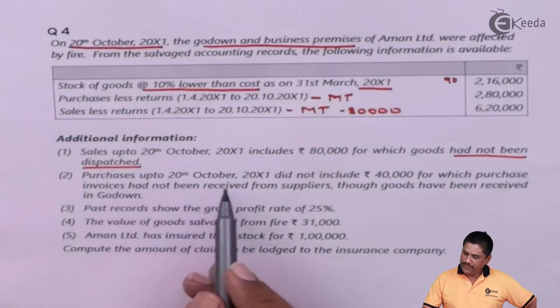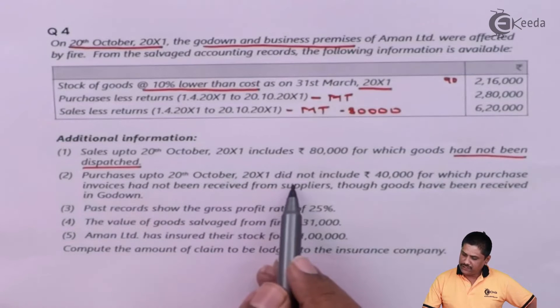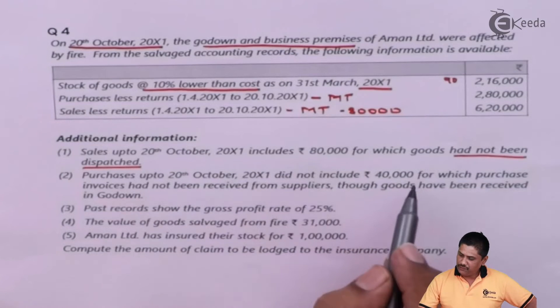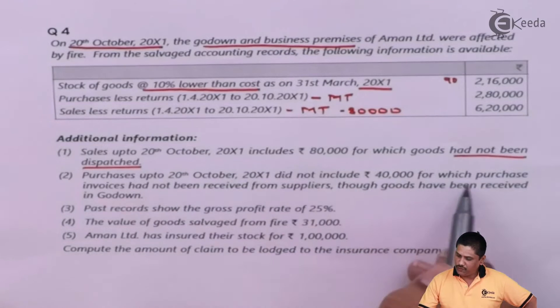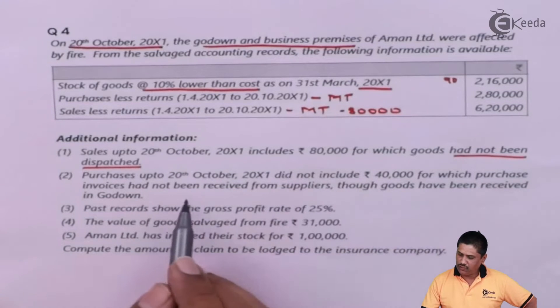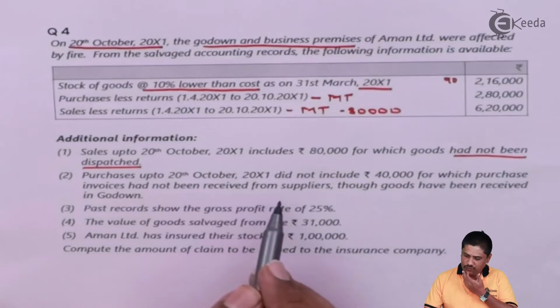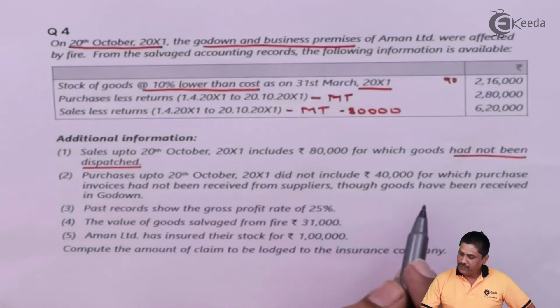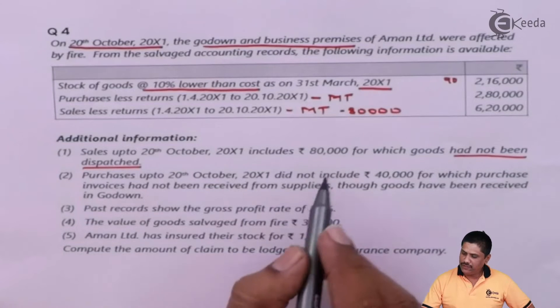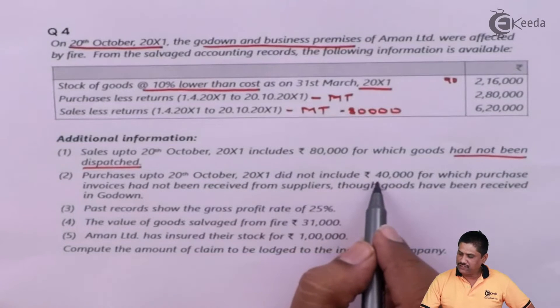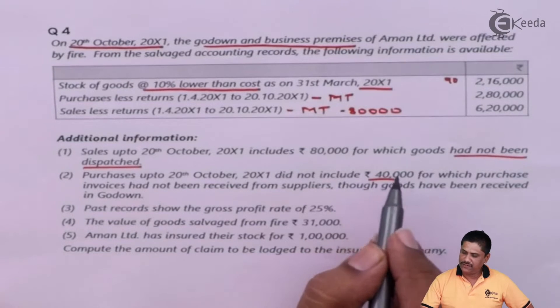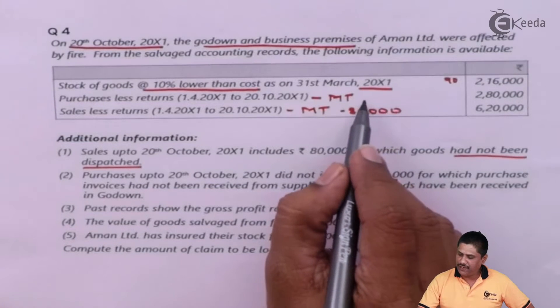Purchases up to 20th October 200X1 did not include Rs. 40,000 for which the purchase invoice has not been received from the supplier, though goods have been received. Since goods are received, it is purchases for us — these are unrecorded purchases and will be added.